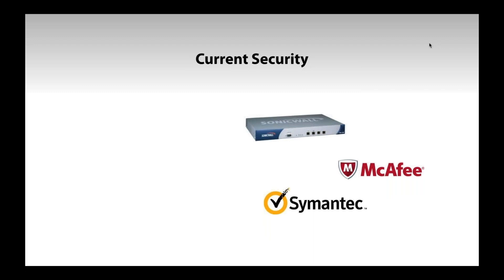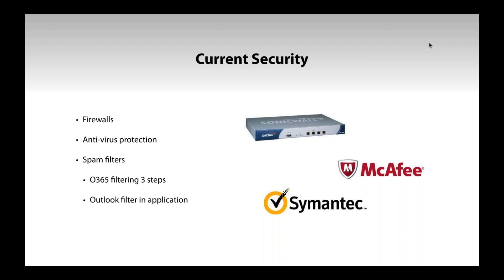You may ask: aren't we paying for security? We are, and we're doing a lot of things. Ease Technologies works hard to make sure your firewalls are updated. Having antivirus software is one of your main lines of defense — whether from Microsoft or additional paid software. Spam filters are part of your email system; Office 365, for example, has three different filtering steps to help stop spam and phishing emails. Outlook also has filters, along with patch management.